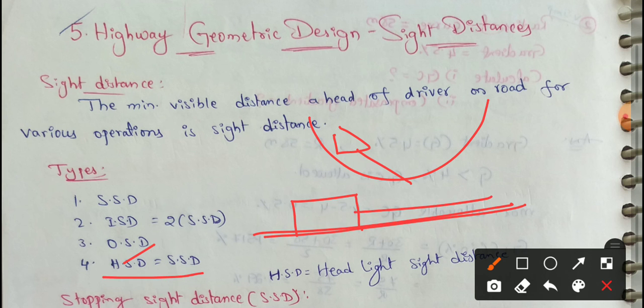Distance visible to driver during night. In night time, it is headlight. Except the valley curve, the light is set in direction, in this situation I use the HSD. Remaining time, the HSD is equal to SSD.